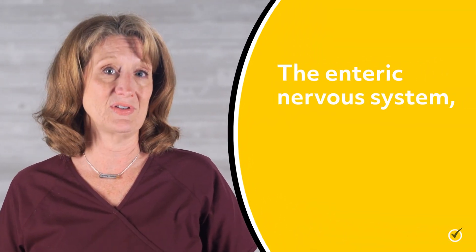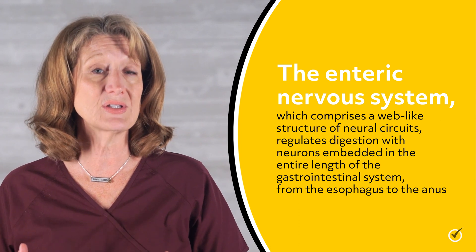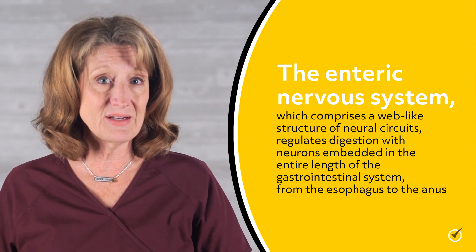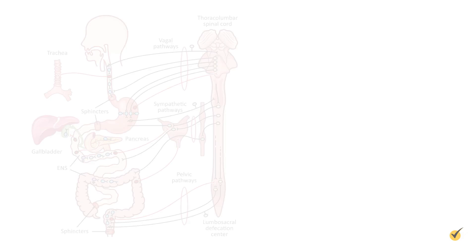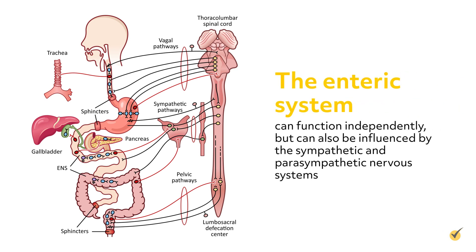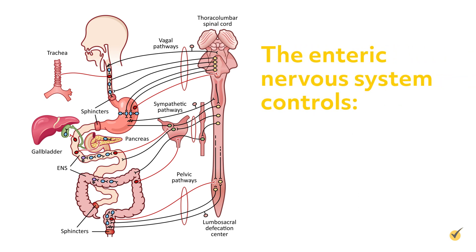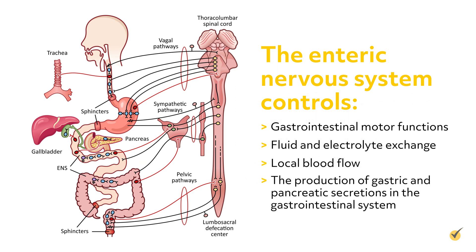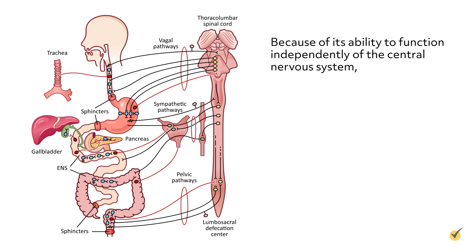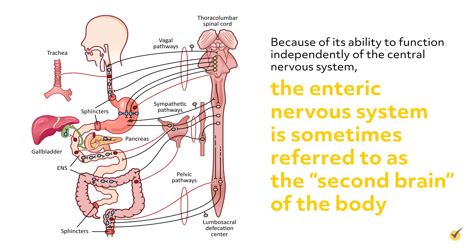The enteric nervous system, which comprises a web-like structure of neural circuits, regulates digestion with neurons embedded in the entire length of the gastrointestinal system, from the esophagus to the anus. The enteric system can function independently, but can also be influenced by the sympathetic and parasympathetic nervous systems. The enteric nervous system controls gastrointestinal motor functions, fluid and electrolyte exchange, local blood flow, and the production of gastric and pancreatic secretions in the gastrointestinal system. Because of its ability to function independently of the central nervous system, the enteric nervous system is sometimes referred to as the second brain of the body.